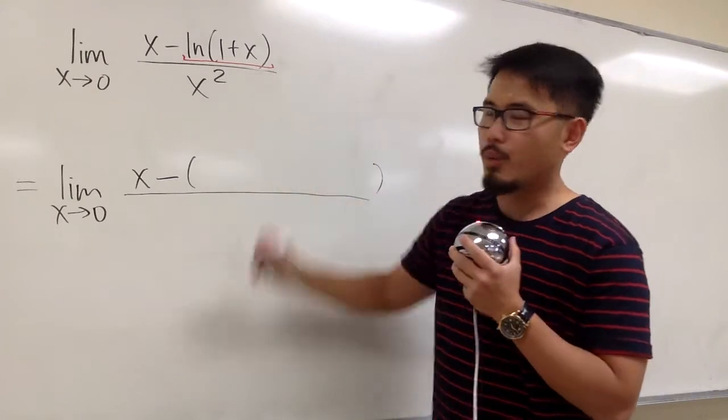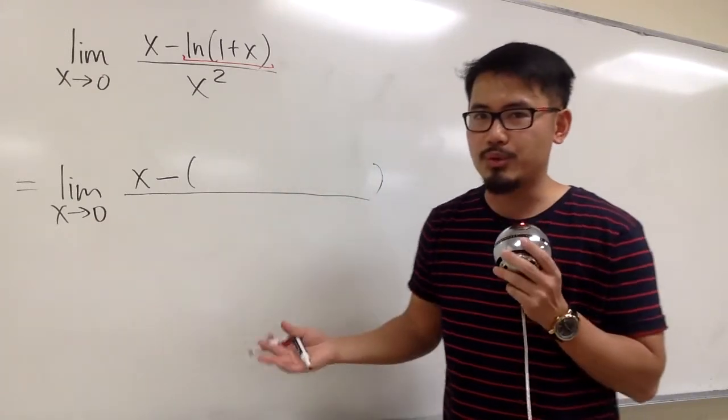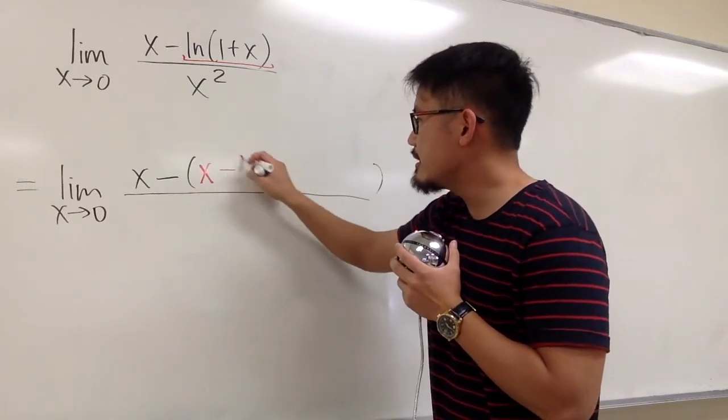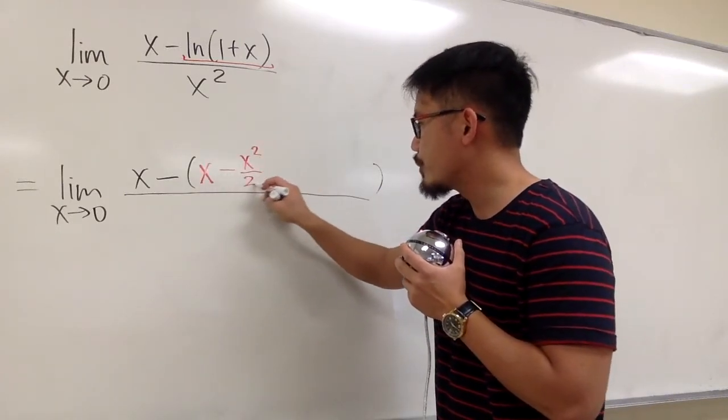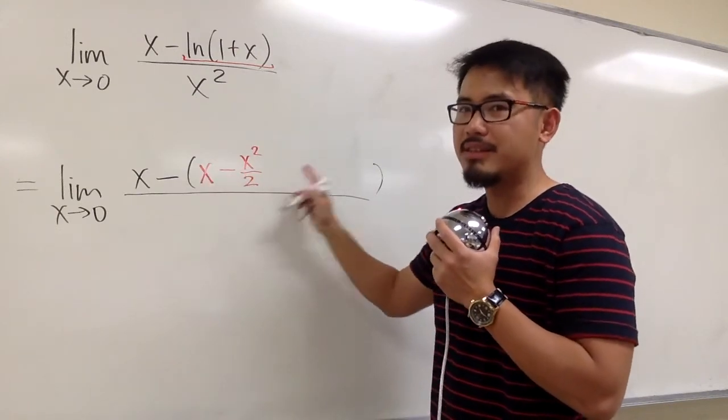For ln(1+x), here is the power series when the center is 0. We will get x minus x²/2. It's alternating: positive, negative, positive, negative, and so on.